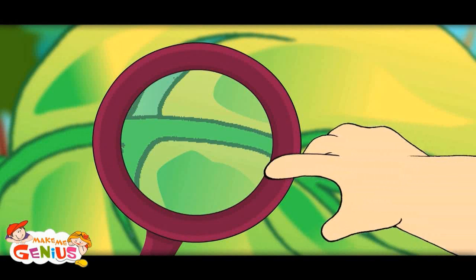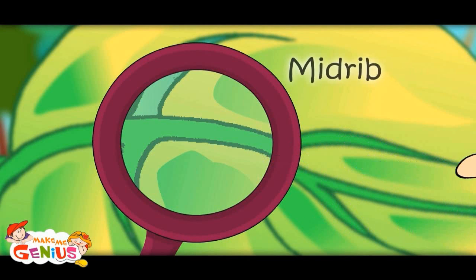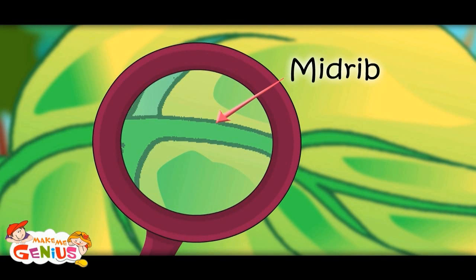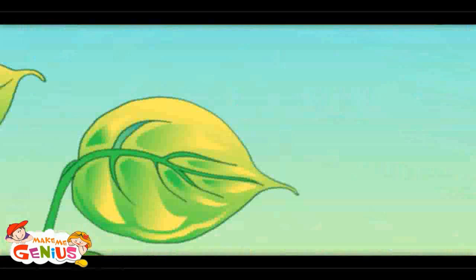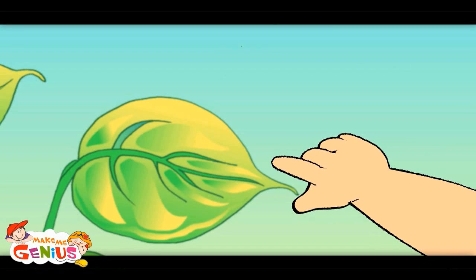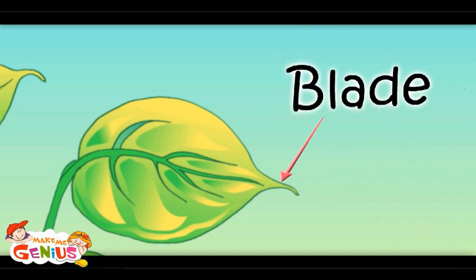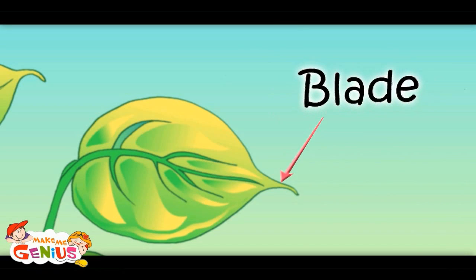This is a very big vein — this is called the midrib. And this skin of the leaf is called the blade of the leaf.